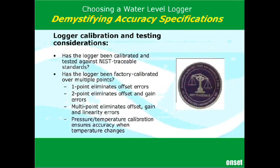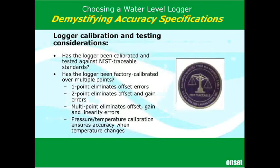Another aspect to consider is finding out from the manufacturer how the logger is tested prior to production and before it ships to you. Some manufacturers may test only one point to ascertain that it's functioning properly. However, we feel it's important that it be tested over its full pressure range at numerous temperatures with NIST-traceable standards. One point can tell you whether it's working and correct for offset; two points can correct for offset and gain. But the multipoint test we showed earlier — where pressure is varied over the full range and the cycle is repeated at numerous temperatures — is needed to give you the confidence you require.